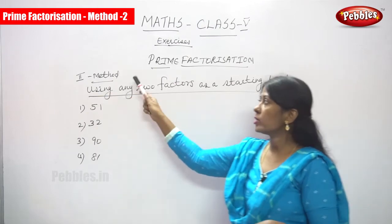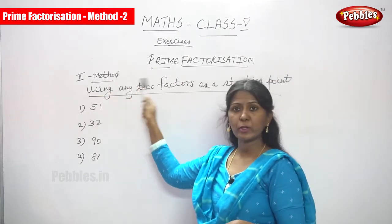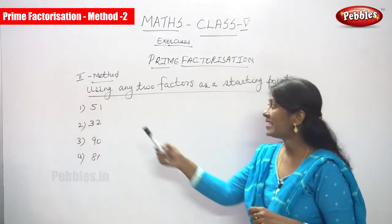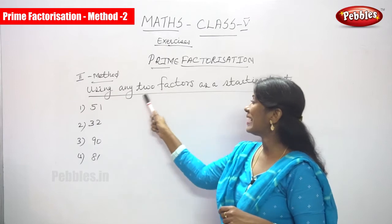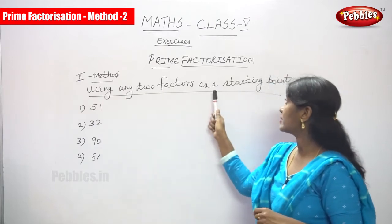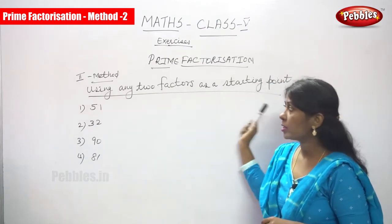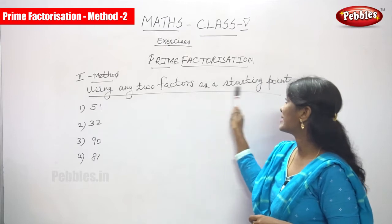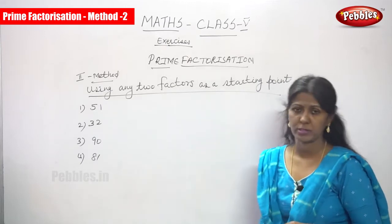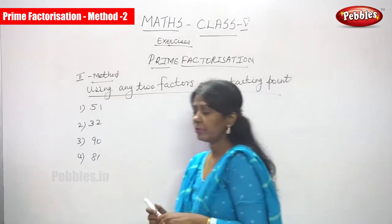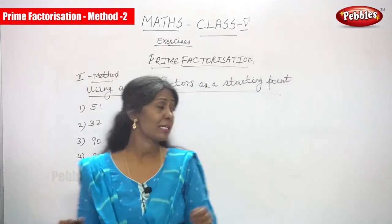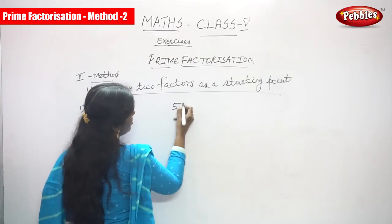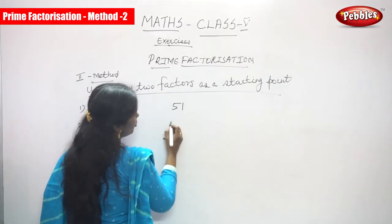Now we are going to the second method of prime factorization. The heading is: using any two factors as a starting point. The first question is 51.